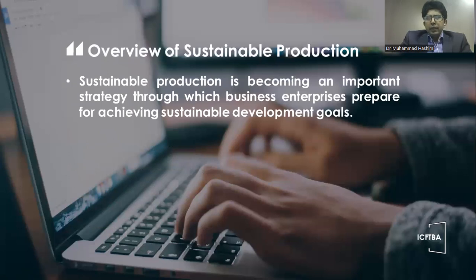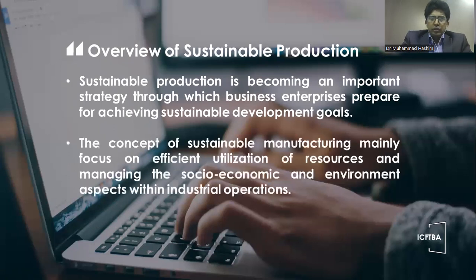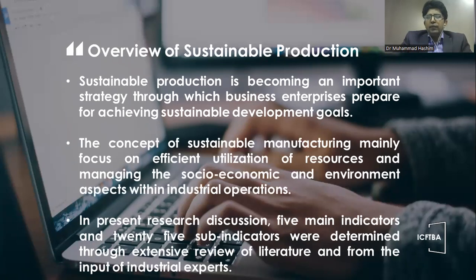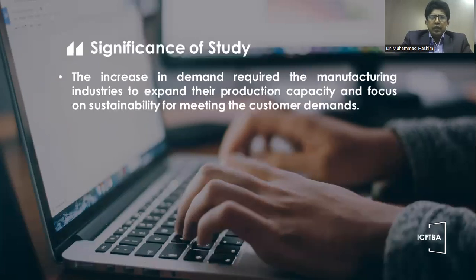Sustainable production is becoming an important strategy through which business enterprises prepare for achieving sustainable development goals. The concept of sustainable manufacturing mainly focused on efficient utilization of resources and managing the socio-economic and environmental aspects within industrial operations. In this research, five main indicators and 25 sub-indicators were determined through extensive review of literature and from the input of industrial experts. The increase in demand required manufacturing industries to expand their production capacity and focus on sustainability while meeting customer demands.